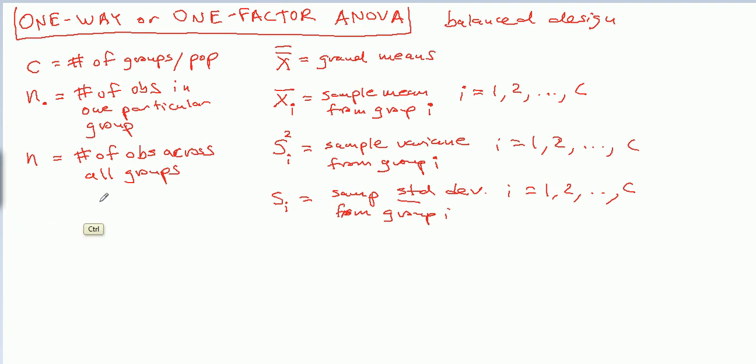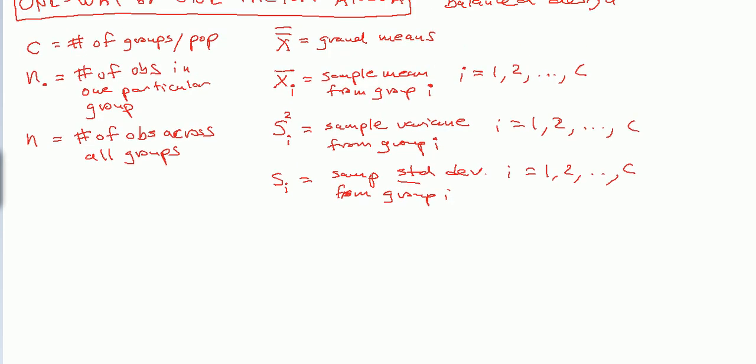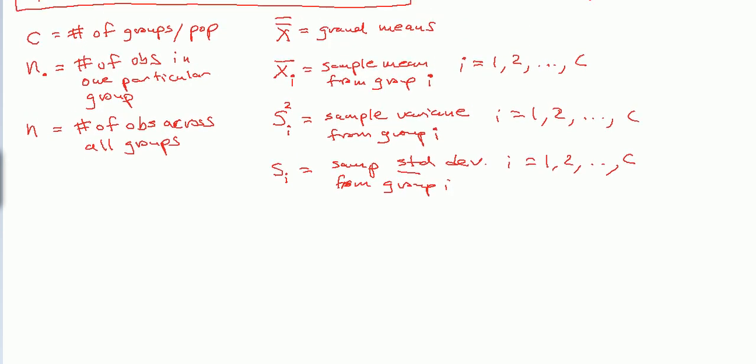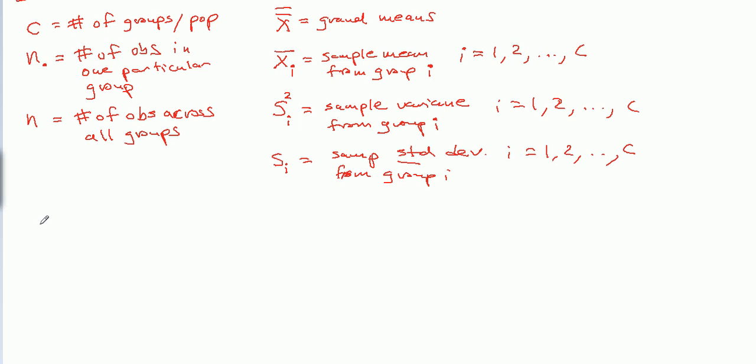So now I think we can get to the formulas. Having these symbols now, I can talk about the sample variance pooled. This is a subscript, by the way. Pooled variance.